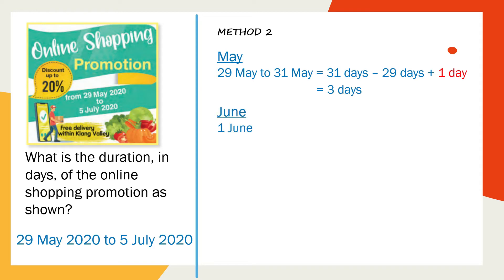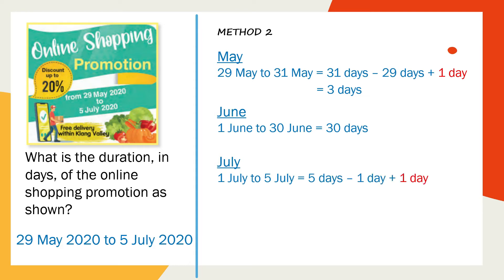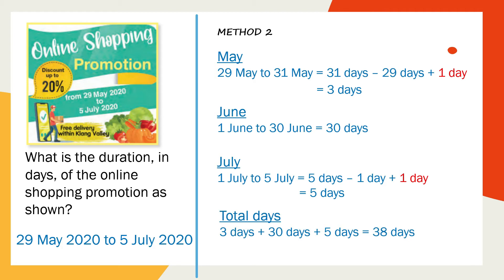The number of days in June is 30 days, as June involves the whole month. From 1st July to 5th July: 5 minus 1 plus 1 equals 5 days. Always remember when finding duration by subtracting, add one day to count the first day. The total is 3 days plus 30 days plus 5 days equals 38 days.